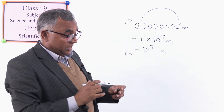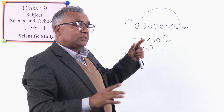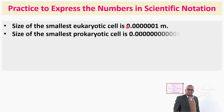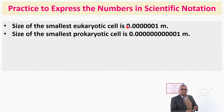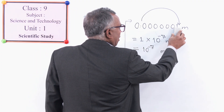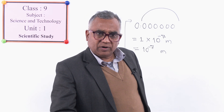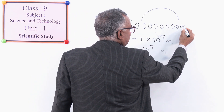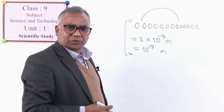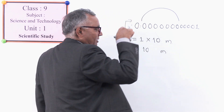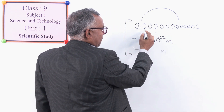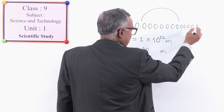In this way, you have to do the others. Next, the smallest prokaryotic cell — count the zeros: there are 11 zeros and then 1. Counting all 12 digits, that will be 10⁻¹². So the answer is 10 to the power minus 12.